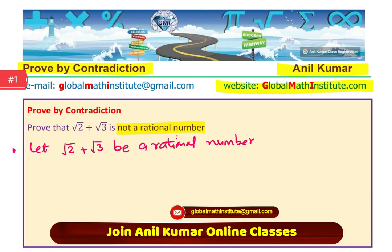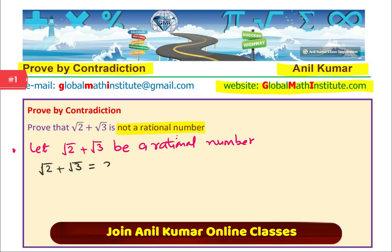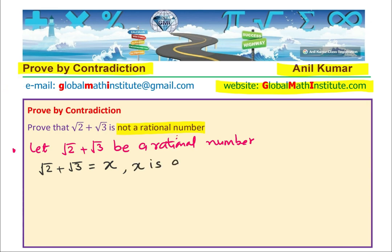Now if it is a rational number, I could really write this as some rational number, right? So let us say, we write square root 2 plus square root 3 as equal to some number x, where x is a rational number. So if I square both sides, what do I get?